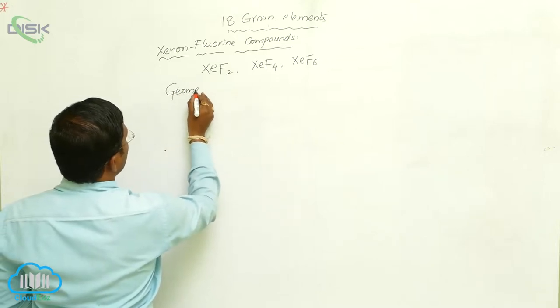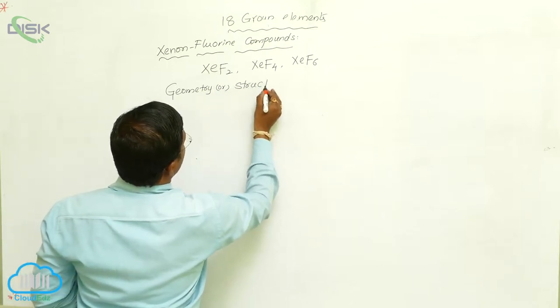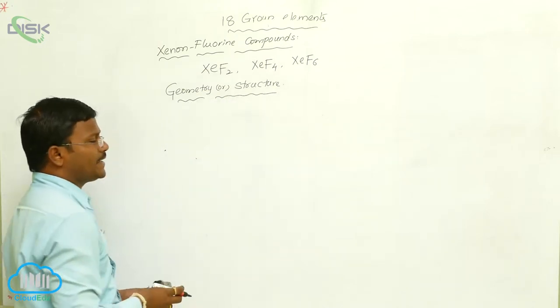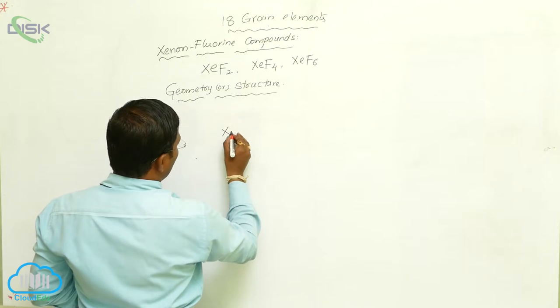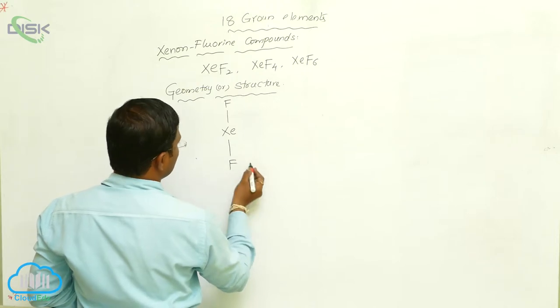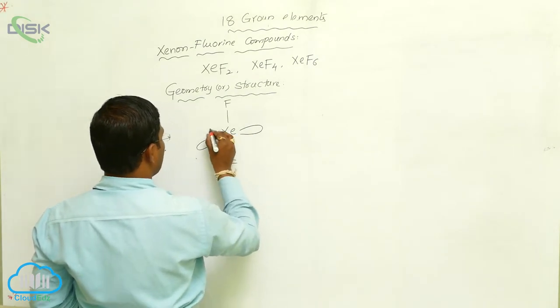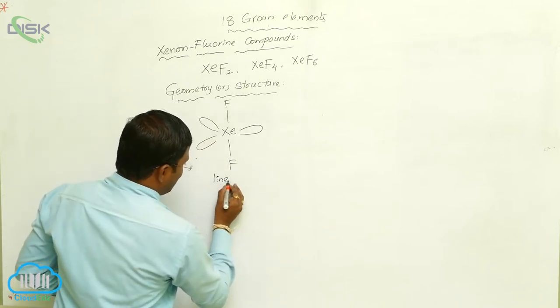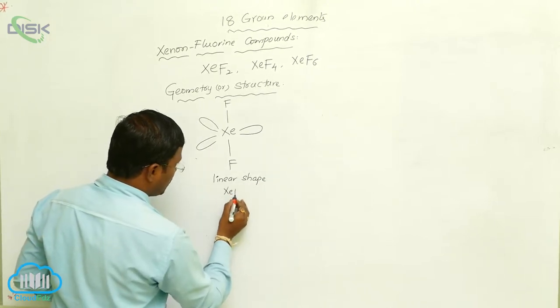The geometry or structure of these xenon fluorides. Xenon difluoride, XeF2, will show linear geometry with three non-bonding pairs of electrons on the xenon. It is represented as linear shape or linear geometry, so this is the structure of xenon difluoride.